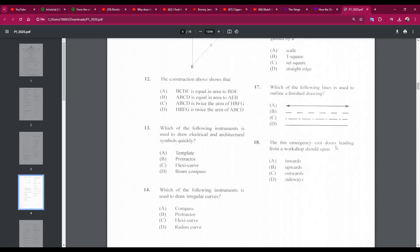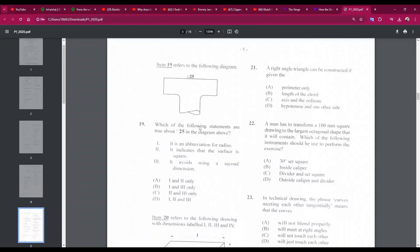Number 18: the fire emergency exit doors leading from a workshop should always open outwards. The answer is C. Number 19: which of the following statements are true about this symbol or this dimension in the diagram above? It is an abbreviation for radius - that's not true. It indicates that the surface is square - yes, that's why we have the square here. It avoids using a second dimension - also yes, because you put this, you don't need to put the other square measurements. So the answer would be 2 and 3. So that's C.